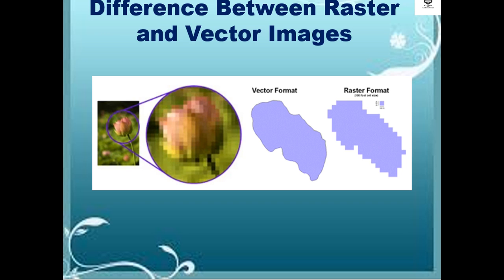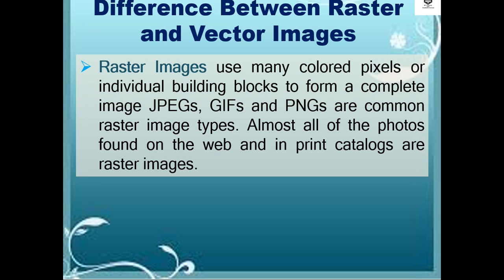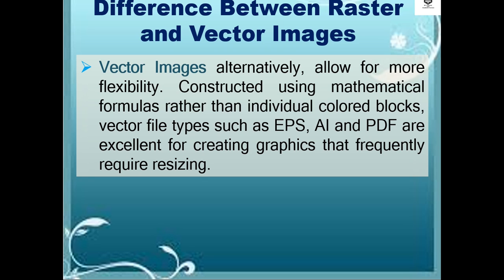Here is the difference between raster and vector images. Raster images use many colored pixels, or individual building blocks, to form a complete image. JPEGs, GIFs, and PNGs are common raster image types, and almost all photos found on the web and in print catalogs are raster images. Vector images alternatively allow for more flexibility, constructed using mathematical formulas rather than individual color blocks. Vector file types such as EPS, AI, and PDF are excellent for creating graphics that frequently require resizing.